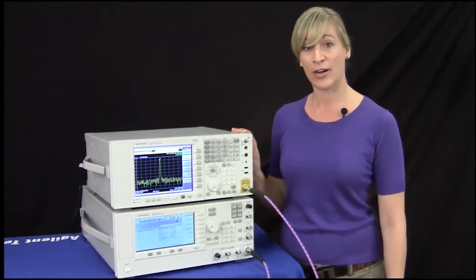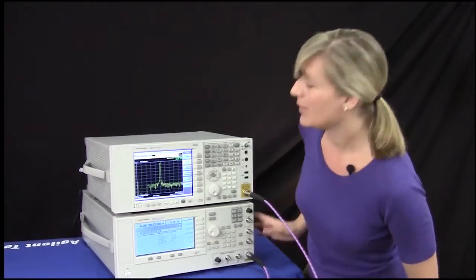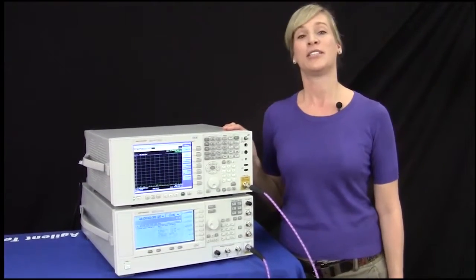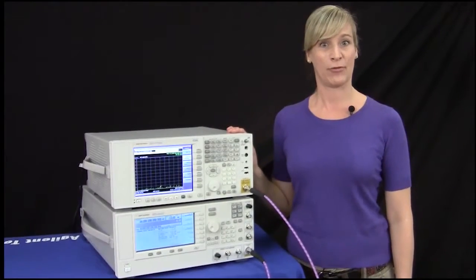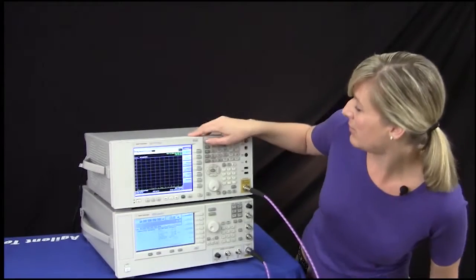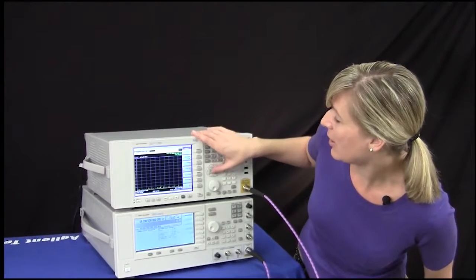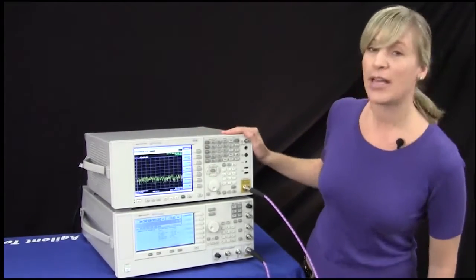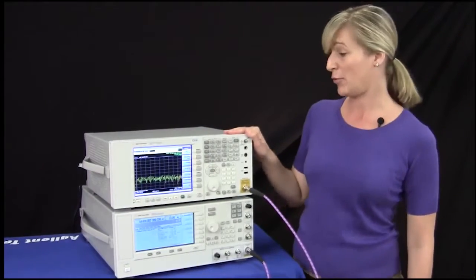I will now turn the RF off and we'll take a look at the noise floor performance of the EXA at 44 gigahertz. I'll adjust the reference of our signal so that we can see it on the screen and I'll place a noise marker at 44 gigahertz.